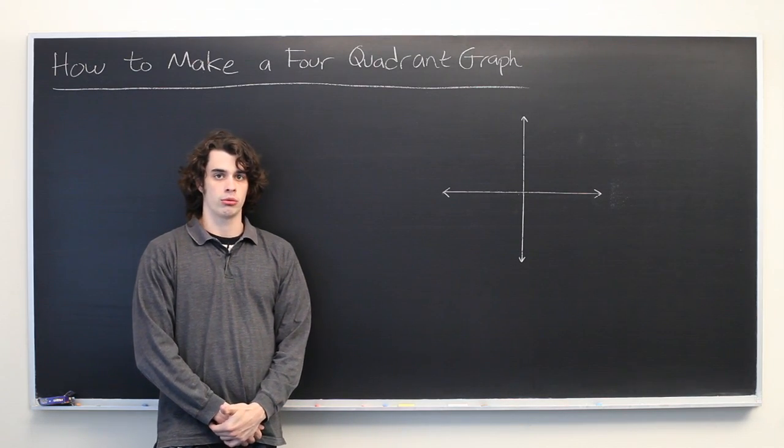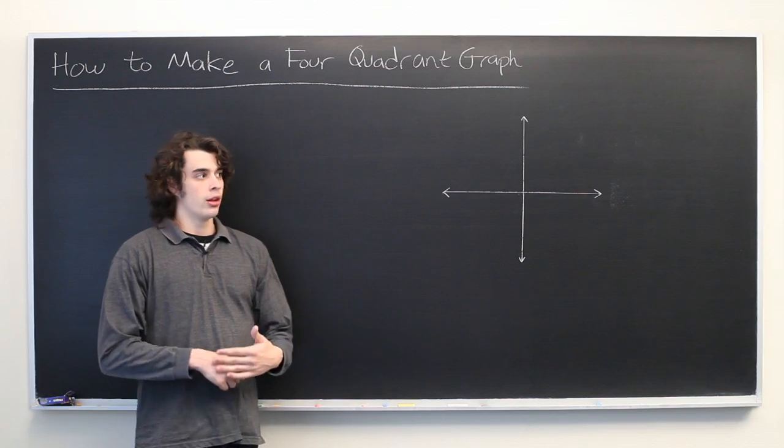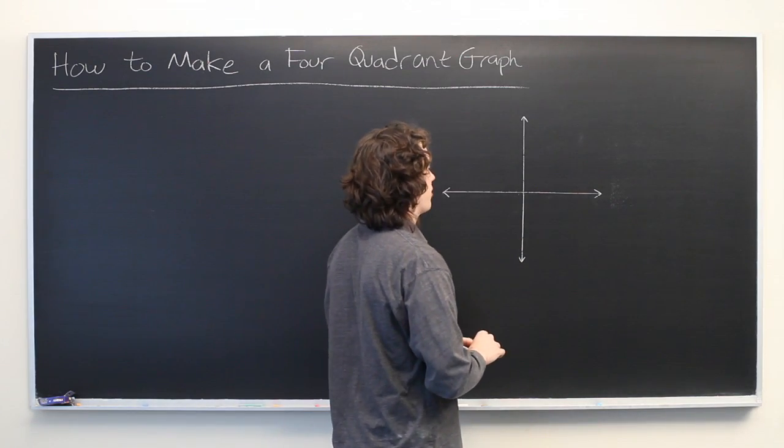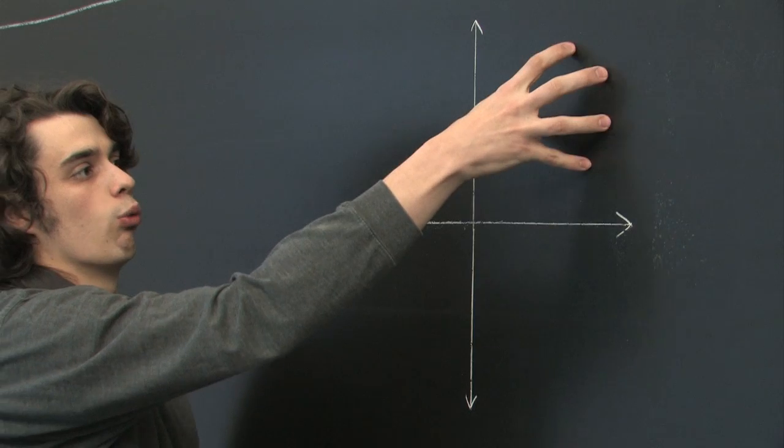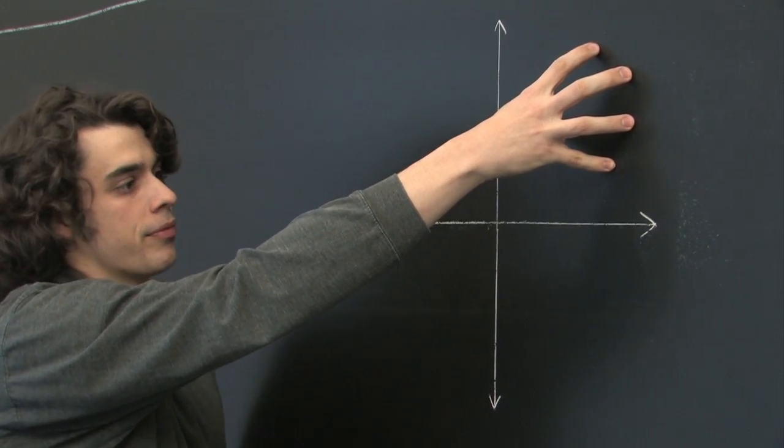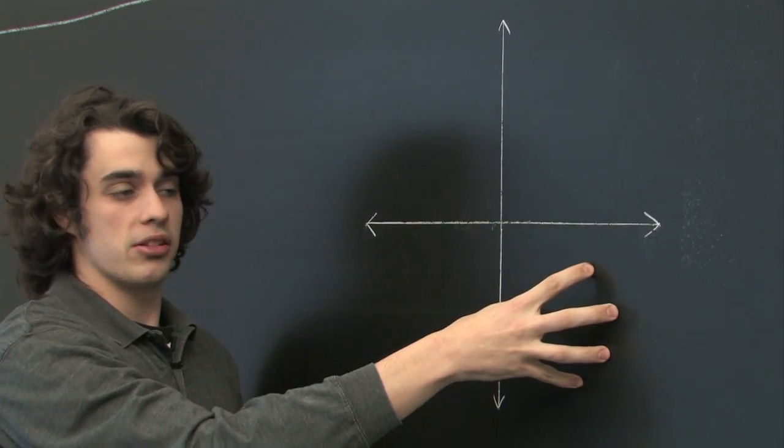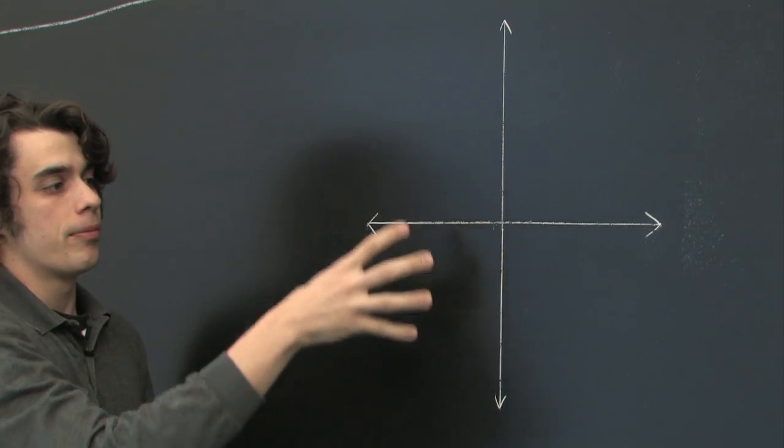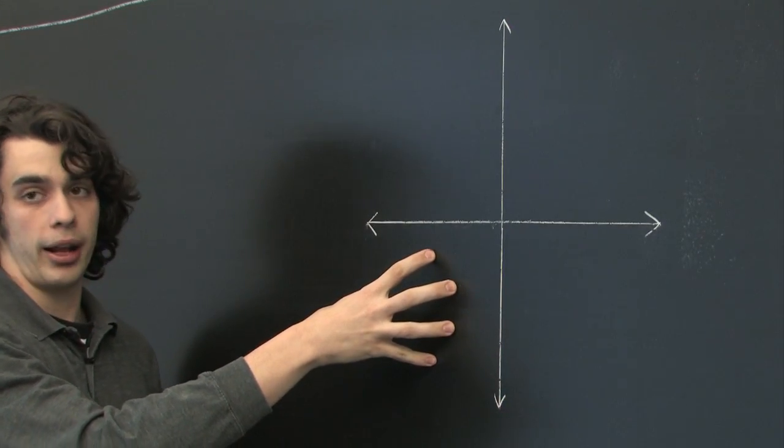The term four quadrants refers to the fact that there are four different general areas of the graph that we're concerned about. Where both x and y are positive, where x is positive and y is negative, where y is positive but x is negative, and both x and y are negative.